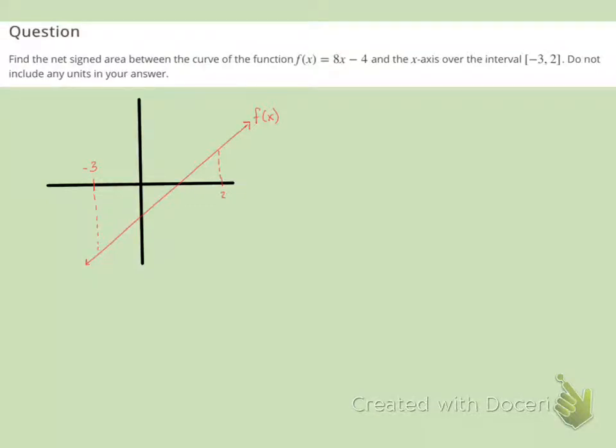This is practice problem number 4 for section 5.2. This says find the net signed area between the curve of the function f(x) equals 8x minus 4 and the x-axis over the interval from negative 3 to 2.